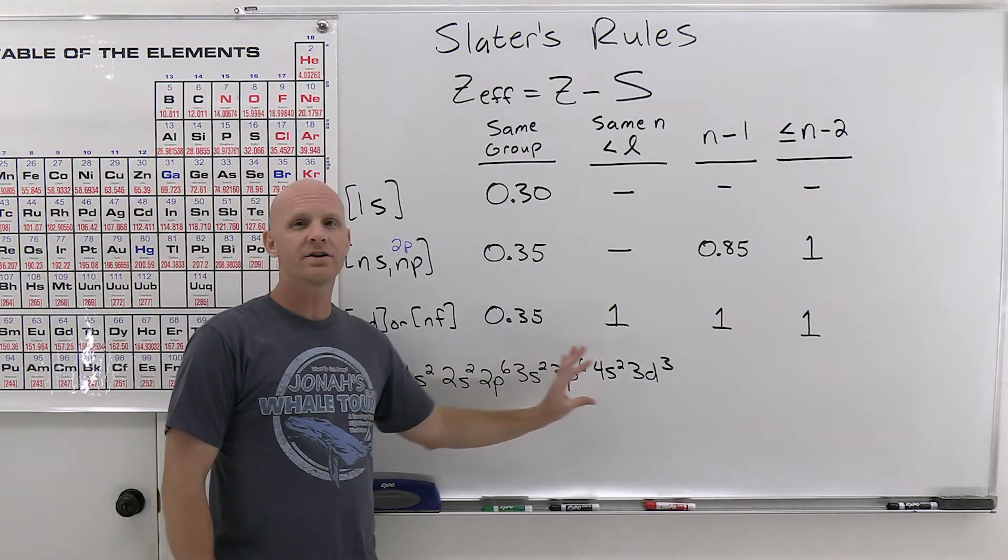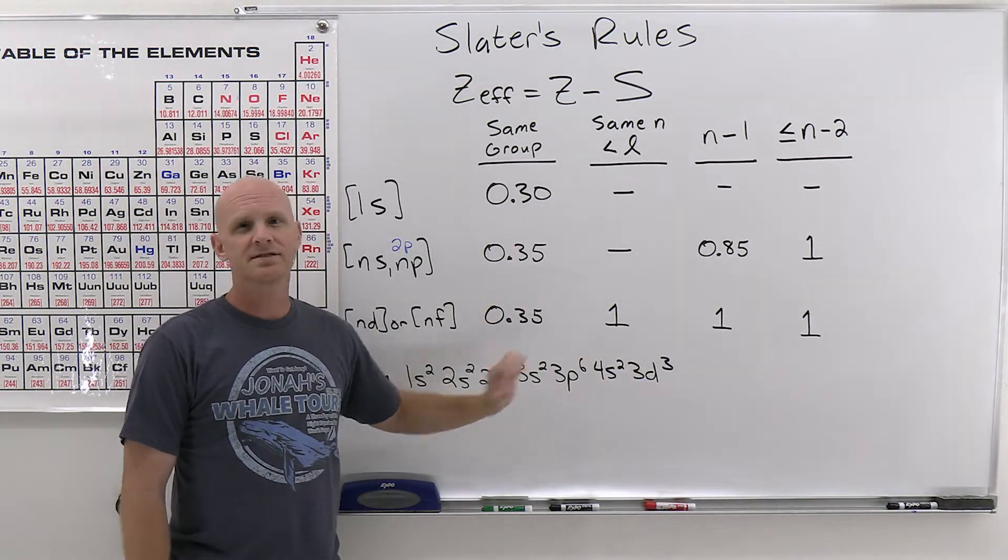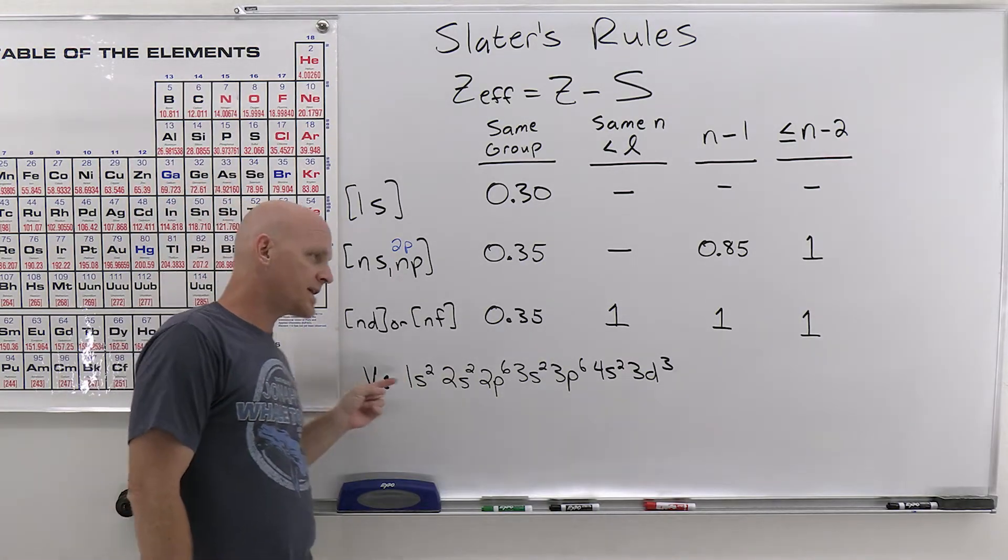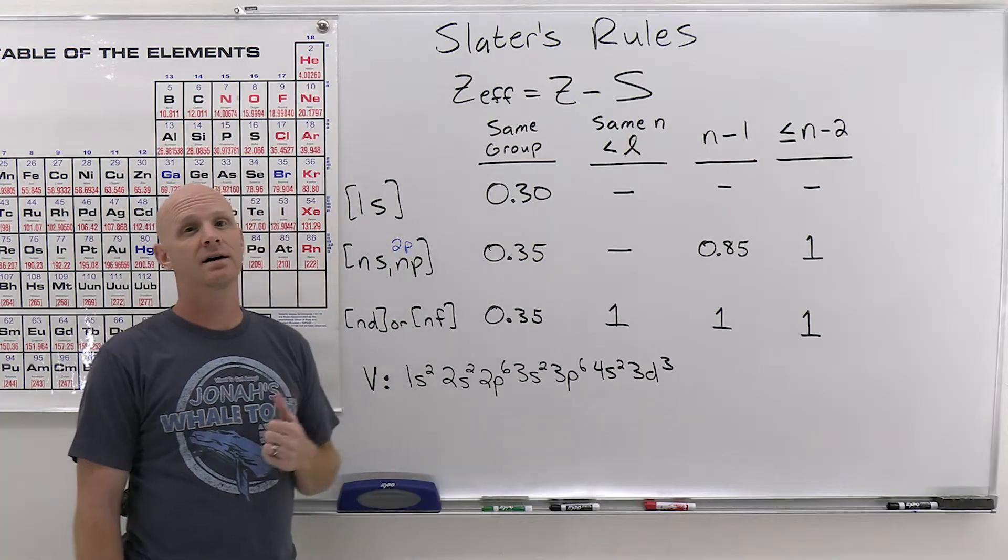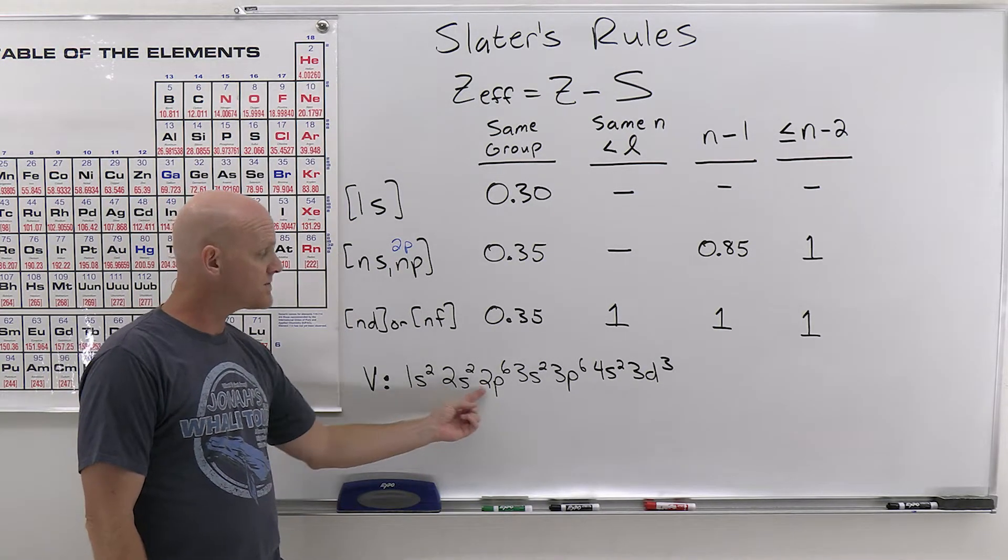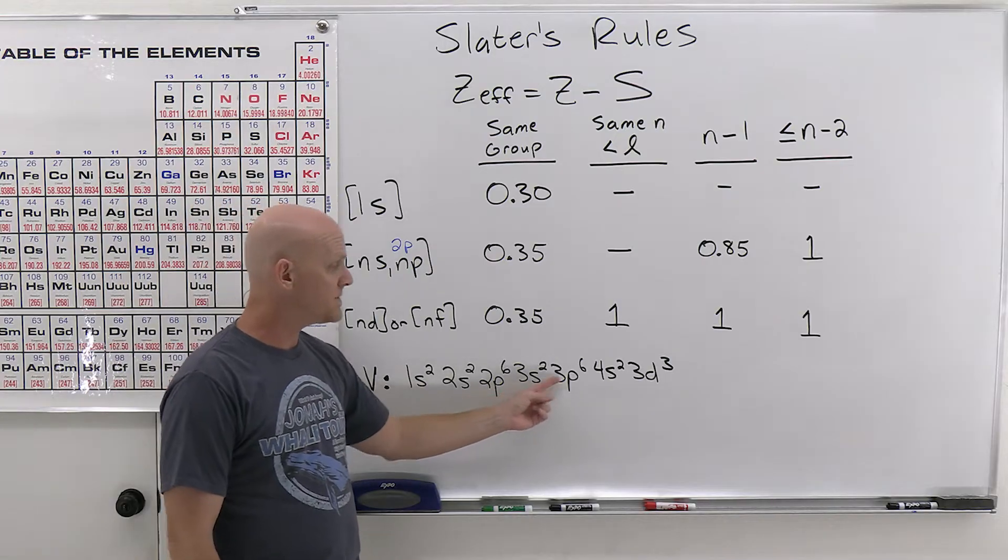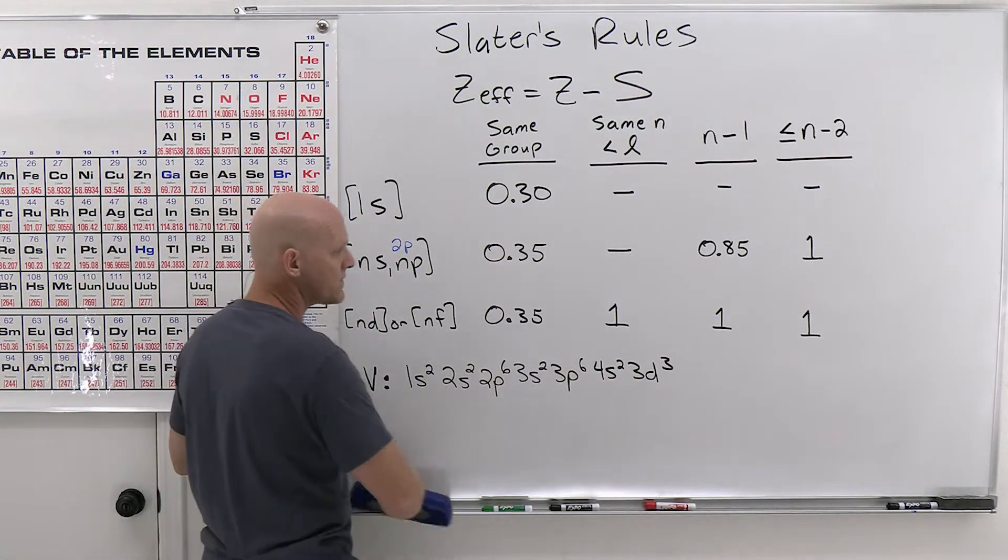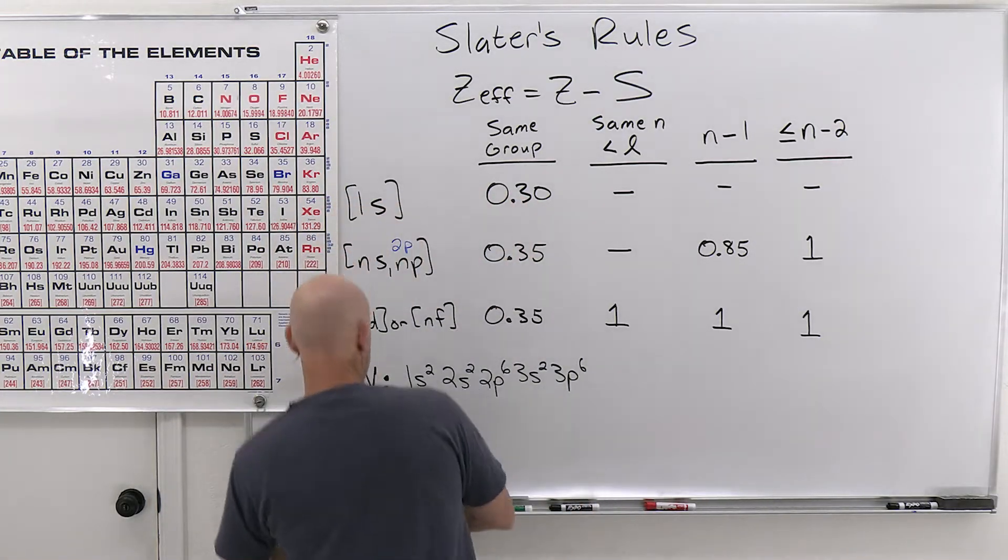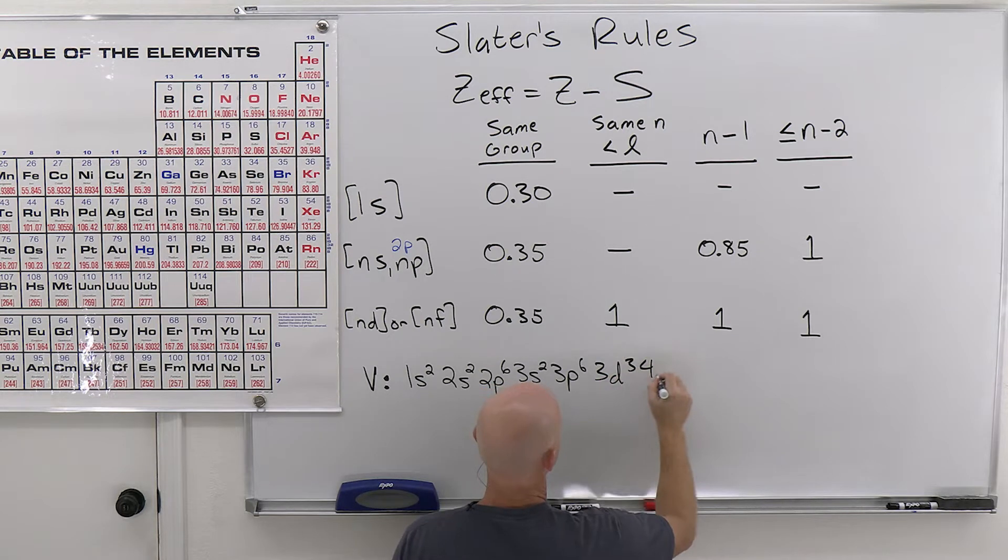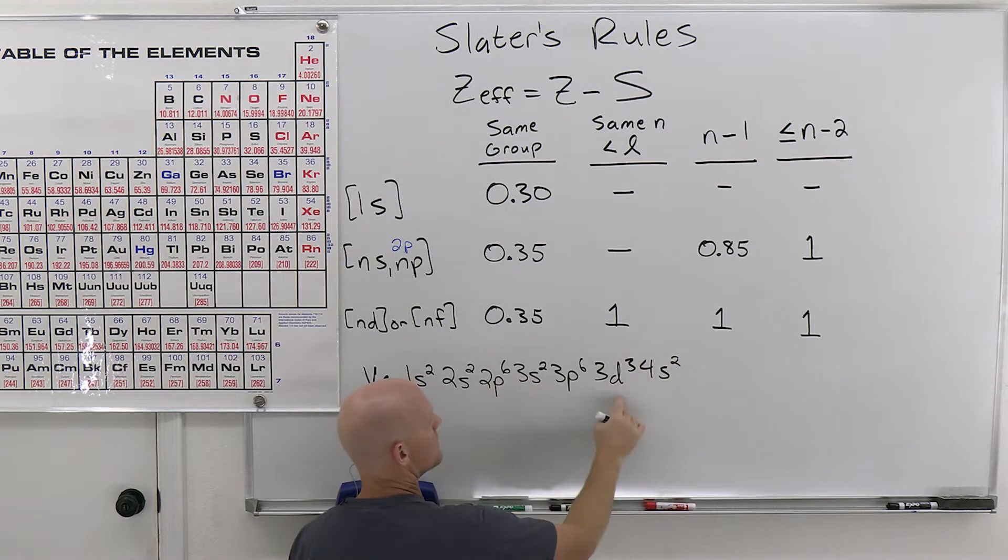One other thing you should know about applying Slater's rules is when you go to apply Slater's rules, you really should write all your electron configuration, if you will, in order of increasing principal quantum numbers. So principal quantum number one for the first shell, two for the second shell, but notice 3s3p, and then really we should write the 3d before the 4s. So I'm going to rearrange that order for the purpose of applying Slater's rules. And so we're going to write 3d3, and then 4s2. That way all the principal quantum number three subshells are together.